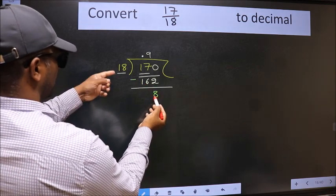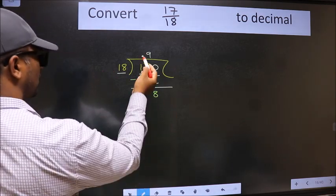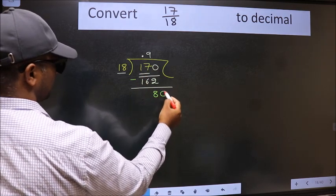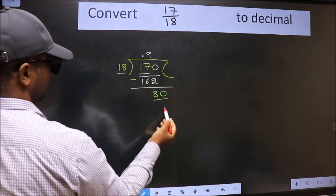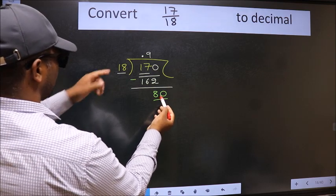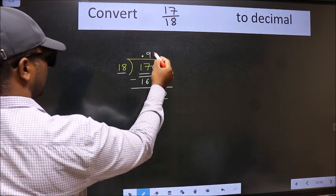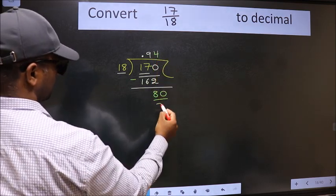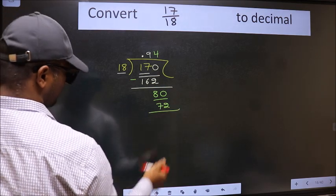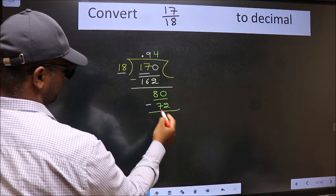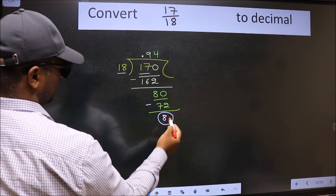8 smaller than 18. And we already have the decimal. So this time directly take 0. So 80. A number close to 80 in 18 table is 18 times 4 is 72. Now we should subtract. We got 8 again.